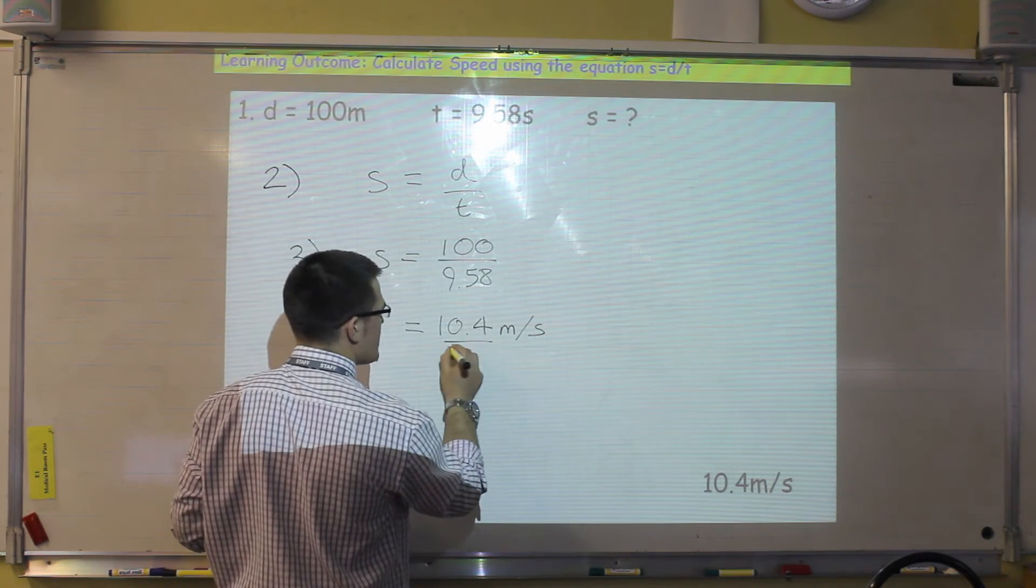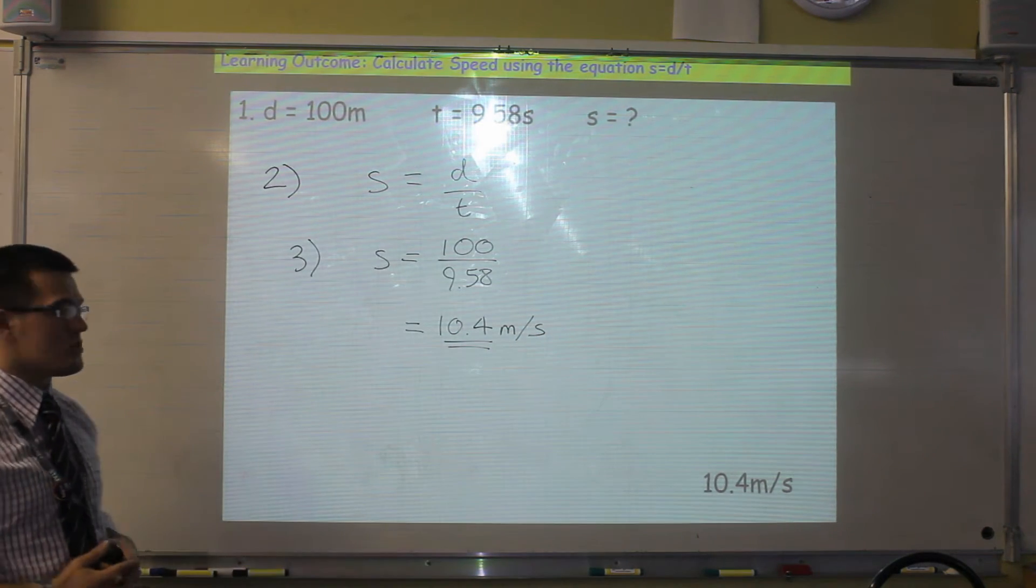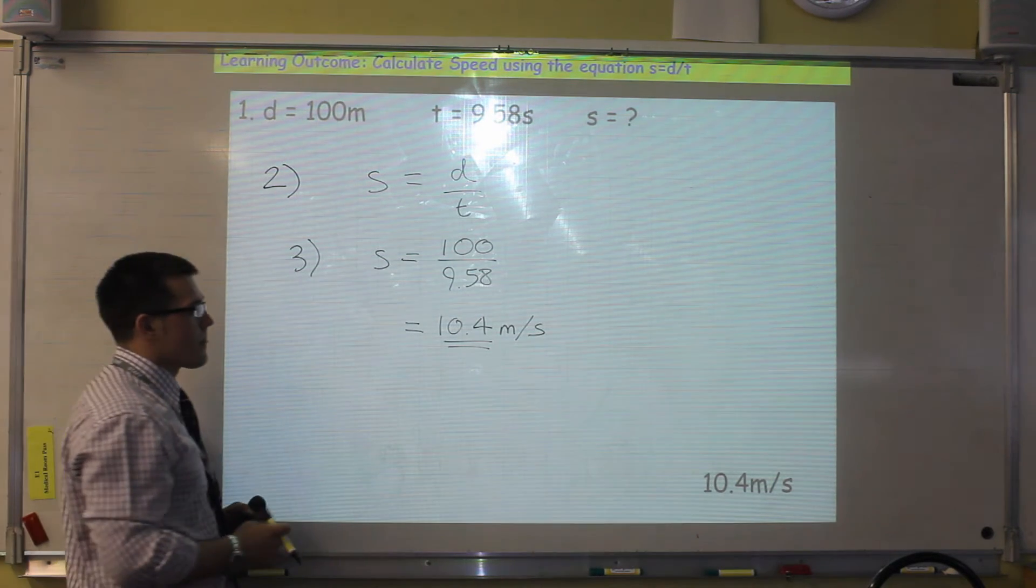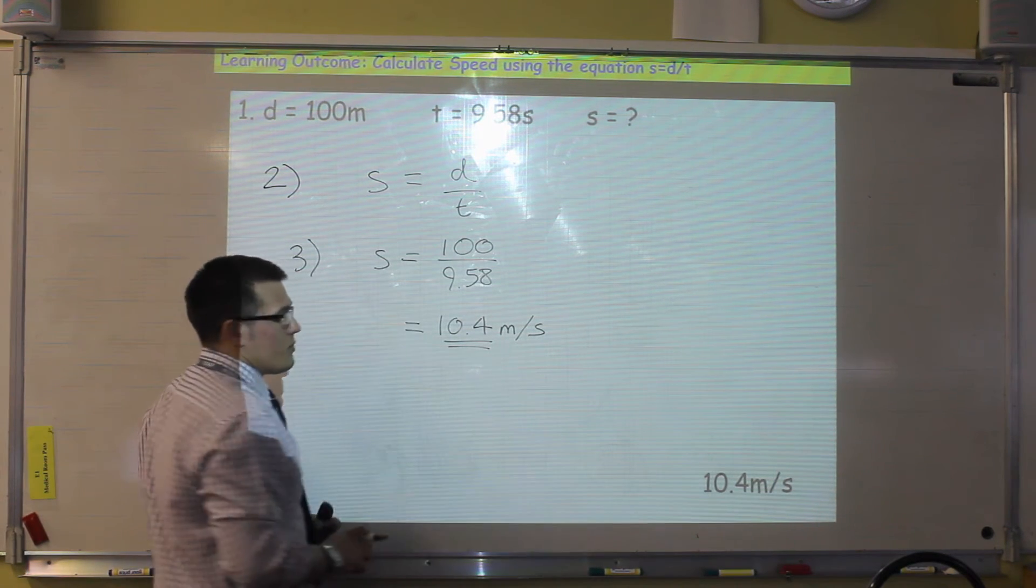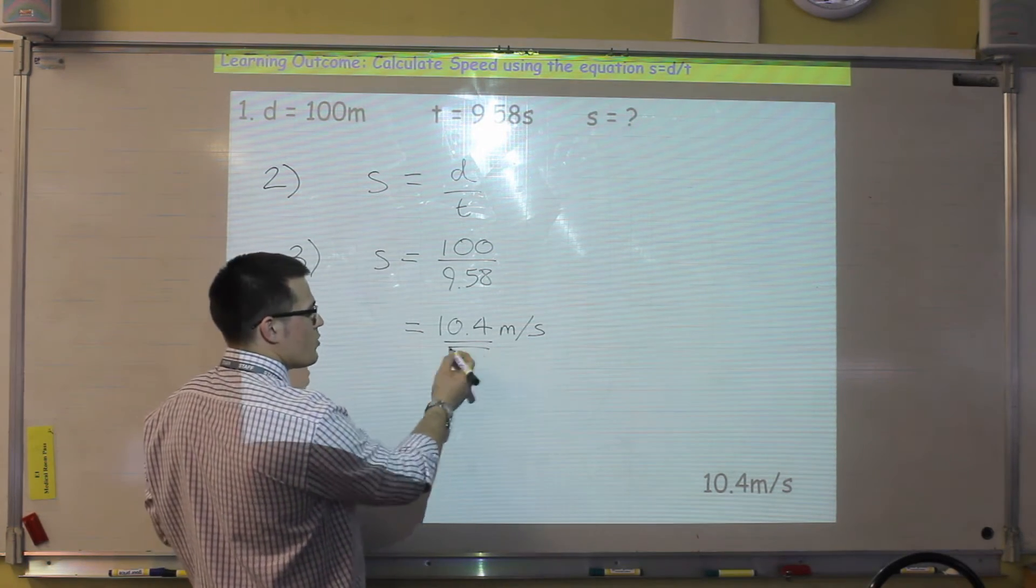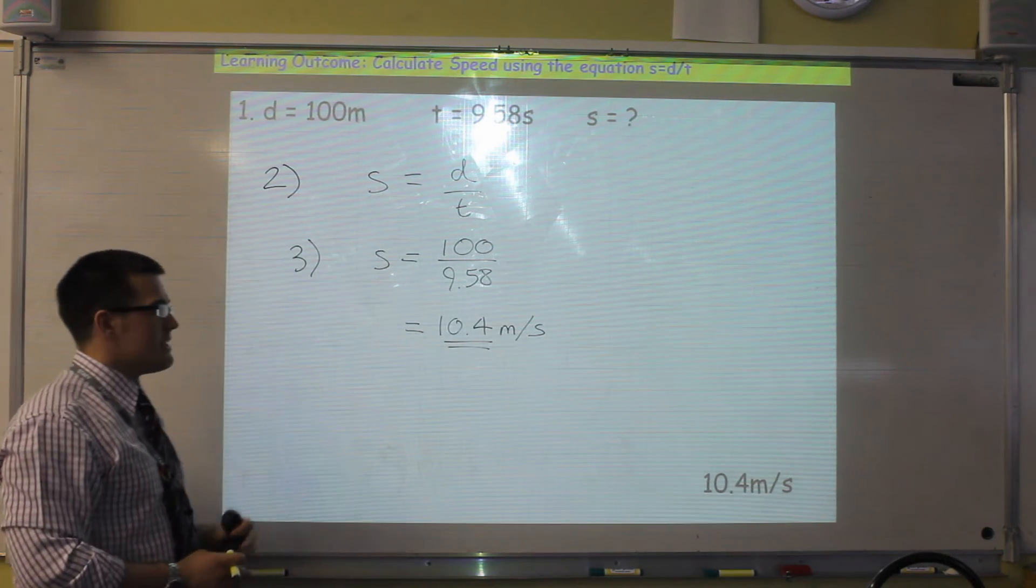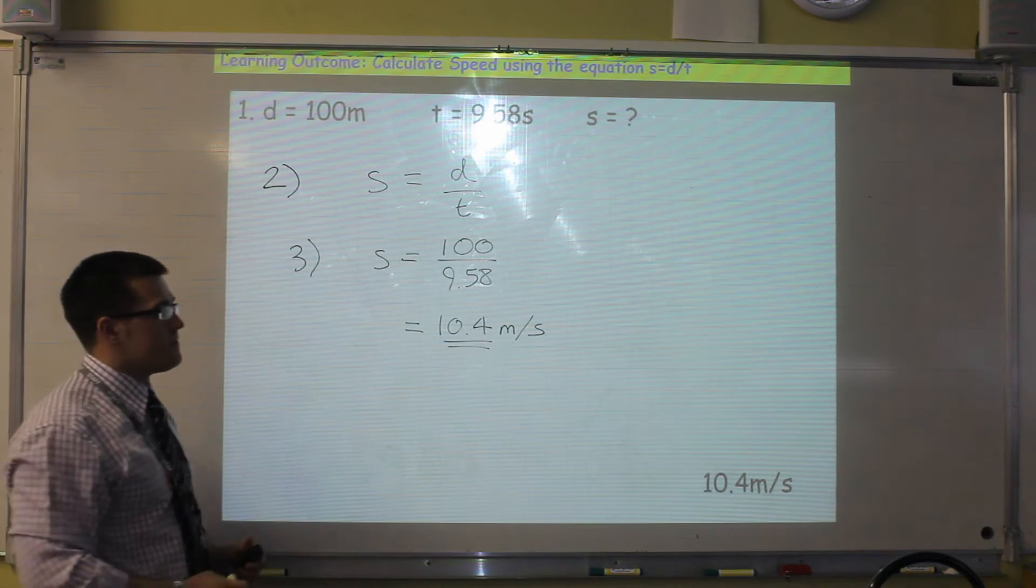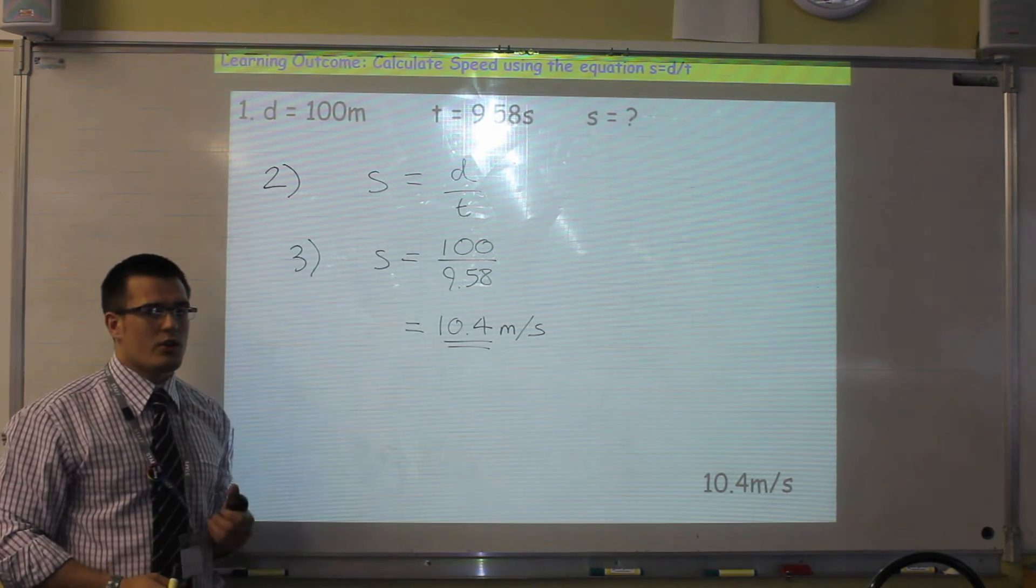You must always remember to put the units at the end of your answer, otherwise it doesn't mean anything. Always, when you put this for an examiner on your exam paper, if it doesn't give you a box to write it, always underline it to make it really clear to an examiner that that is your final answer.